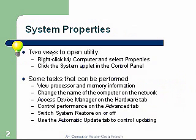First utility we're going to look at is System Properties. Two ways to open this utility: we can right-click My Computer and select Properties, or we can click on the System Applet in the Control Panel. Some tasks that can be performed: we can view the processor memory information, change the name of the computer on the network, access Device Manager on the Hardware tab, control Performance in the Advanced tab. We can switch System Restore on or off and use Automated Update to control updating. A very important system tool.